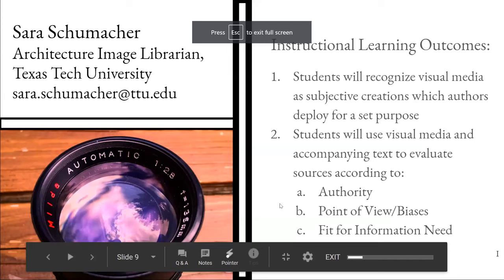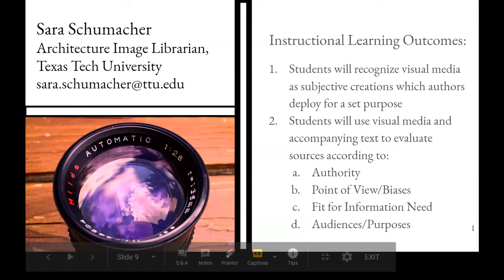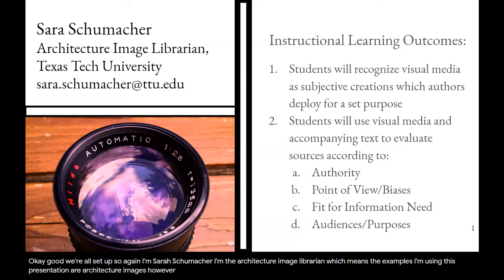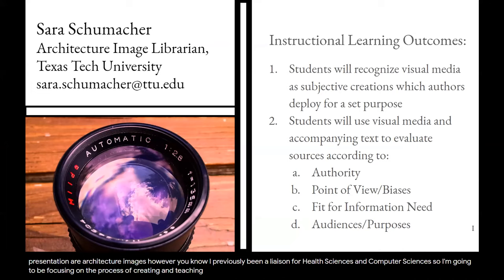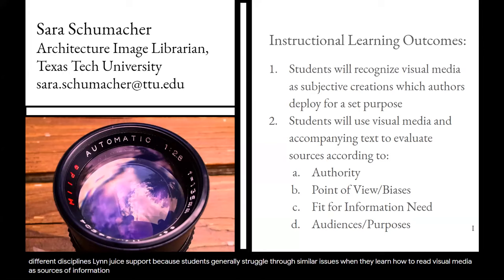I'm Sarah Schumacher, the architecture image librarian, which means the examples I'm using are architecture images. I've previously been a liaison for health sciences and computer sciences, and I want to show you how you can adapt this method to use in different disciplines you support. Students generally struggle through similar issues when they learn how to read visual media as sources of information, particularly through a disciplinary perspective. First, students can fail to recognize the decisions that authors make when creating, contextualizing, and disseminating visual material. Second, they often don't realize they can use visual media, captions, citations, and metadata to vet their sources. By breaking down how the author created something, they're learning base knowledge that can help them later when they need to create their own communications — visual, textual, or multimodal.